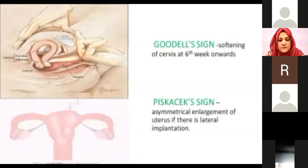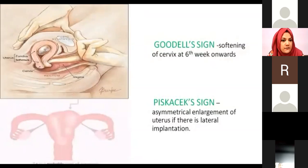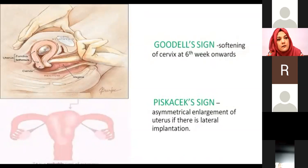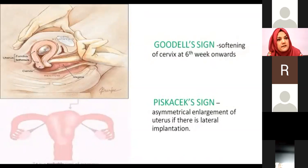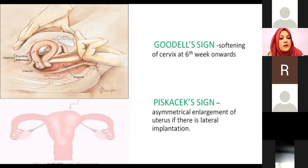In some pregnancies, when the abdomen is examined externally, there is asymmetrical abdominal enlargement rather than symmetrical. This is also a probable sign, as in some cases there may be implantations in the middle or lateral aspect of the uterus, or there may be uterine or abdominal tumors causing asymmetrical abdominal enlargement.